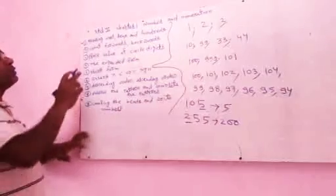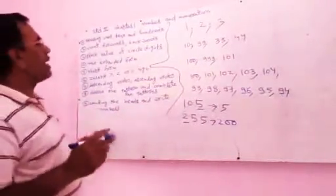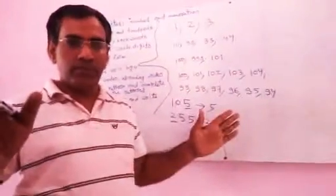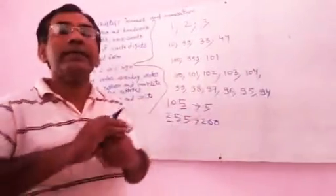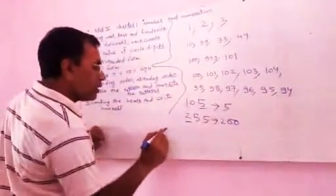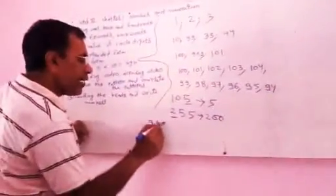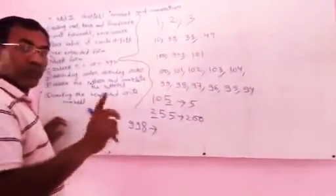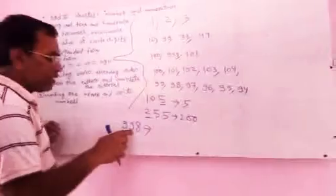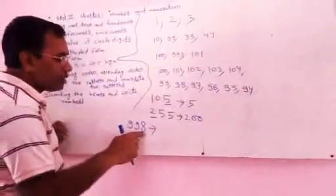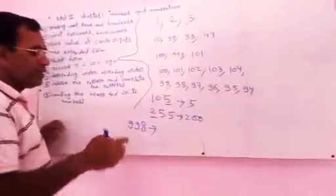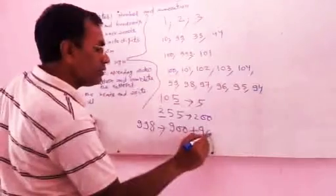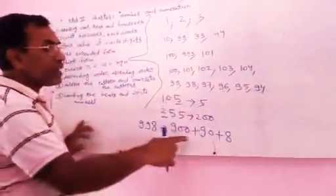Now I am teaching you topic number 4: the expanded form. You have been given a number and you have to expand it — write it in expanded form. For example, you are given 998. Write it in expanded form. Reading: ones, tens, hundreds — it means 900 plus 90 plus 8. This is the expanded form.